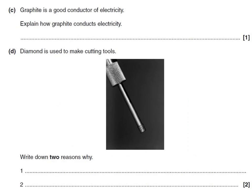Graphite is a good conductor of electricity. Explain how it conducts electricity. It has delocalised electrons which can carry electricity, or allow electricity to flow.